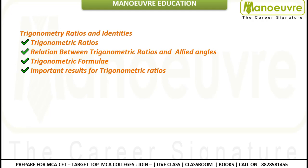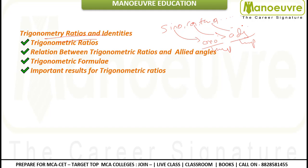Trigonometric identities are sin θ, cos θ, tan θ, and so forth — you may already be aware of these. Each has a respective trigonometric ratio: sin θ = opposite/hypotenuse, cos θ = adjacent/hypotenuse, tan θ = opposite/adjacent. Depending on the varying value of the angle θ, the trigonometric ratios will change. These ratios are also related to allied angles.